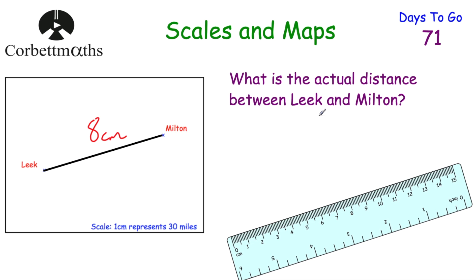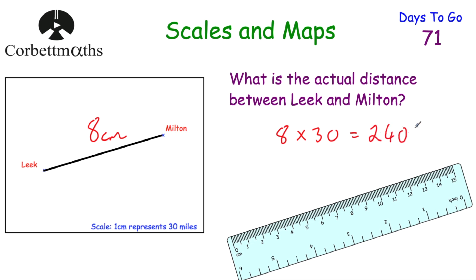The question asks for the actual distance between Leake and Milton. One centimetre represents 30 miles, so if they were one centimetre apart they'd be 30 miles apart in real life; two centimetres apart would be 60 miles; three centimetres would be 90 miles, and so on. Because they're 8 centimetres apart on the diagram, we do 8 lots of 30. 8 times 3 is 24, so 8 times 30 is 240. The actual distance between Leake and Milton is 240 miles.